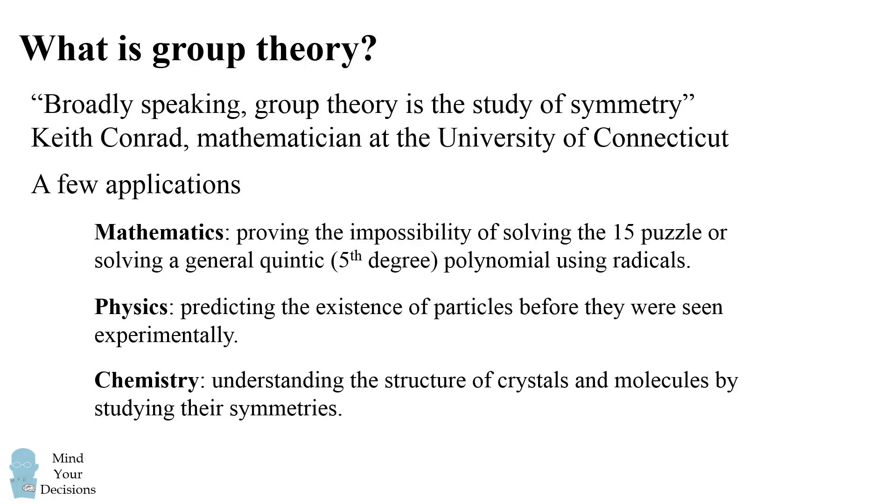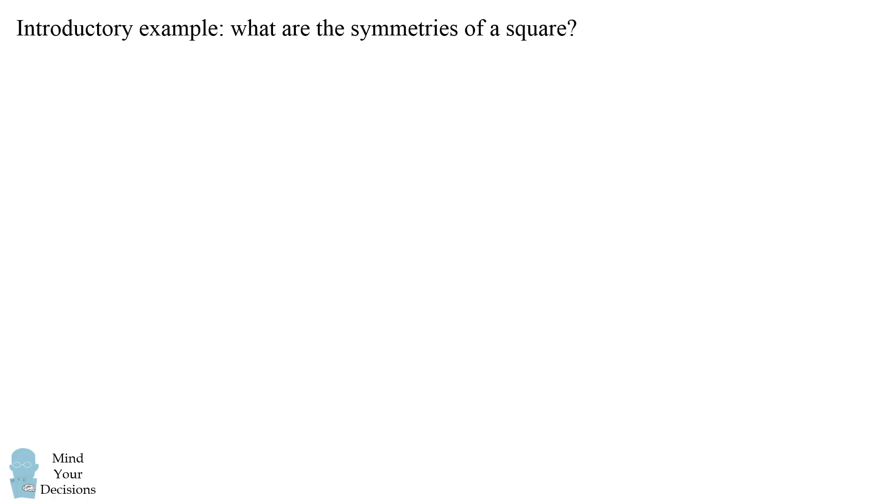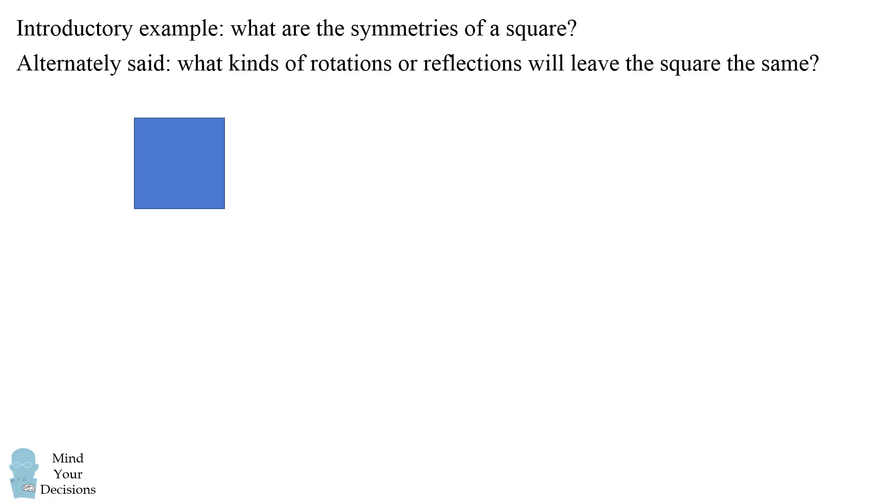So what's an example of group theory? The introductory example is what are the symmetries of a square? Alternately said, what kinds of rotations or reflections will leave the square exactly the same as it started? Now if you have a square, one thing you can do is you can rotate it by 0 degrees. You can leave it as it is. This is one symmetry.